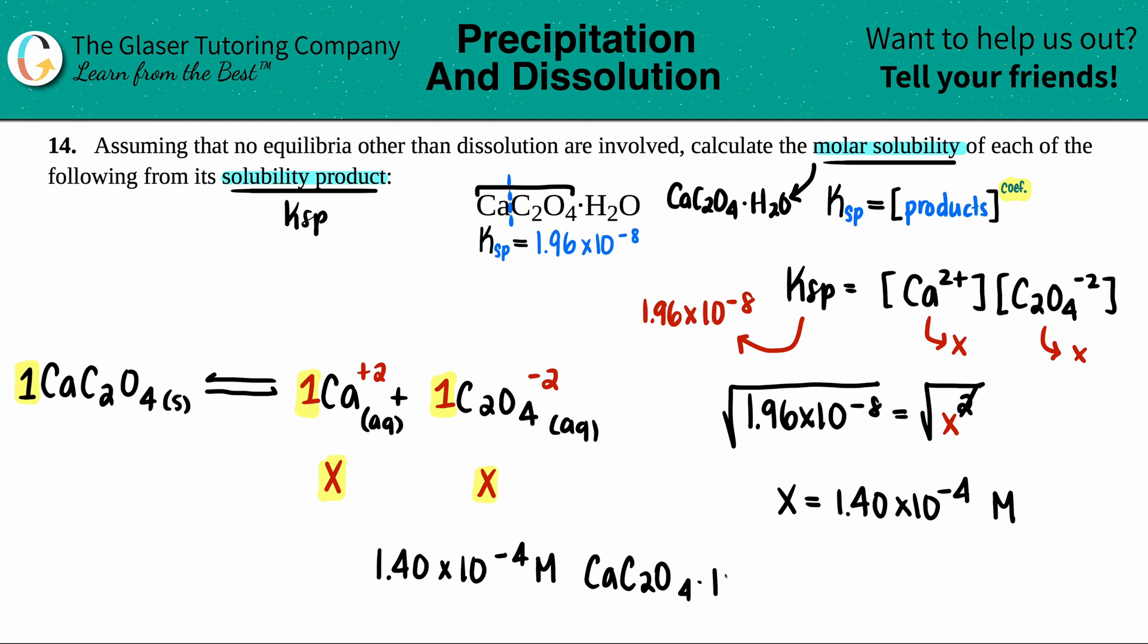So I can just say that this would be 1.40 times 10 to the negative fourth molarity of the CaC2O4·H2O. And that is the final answer.